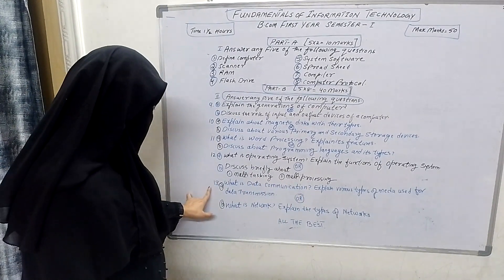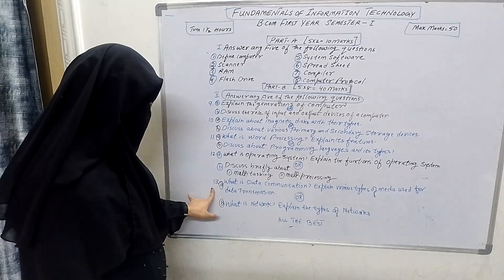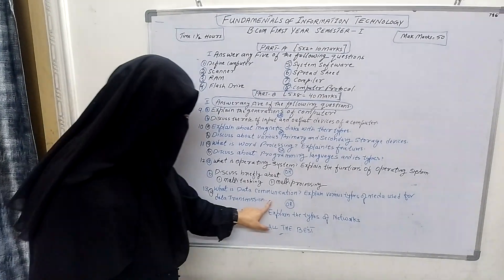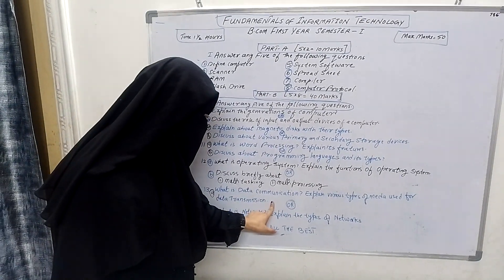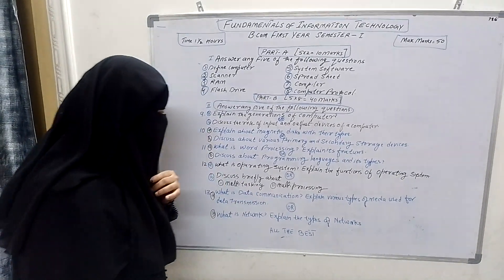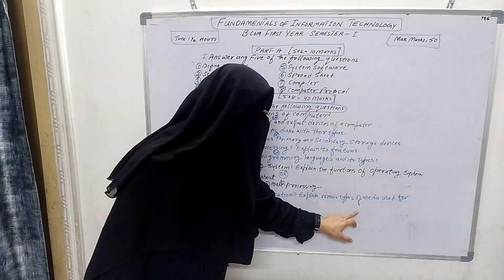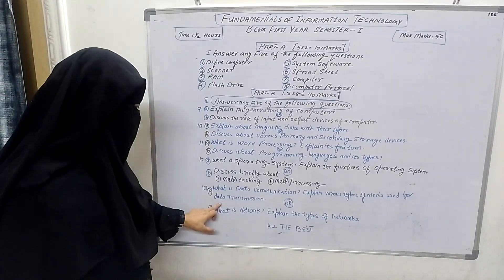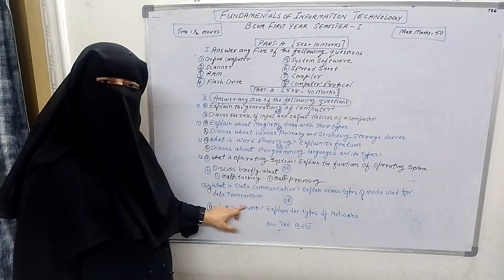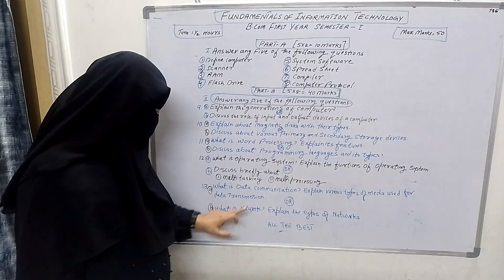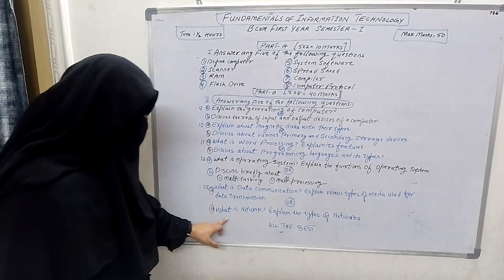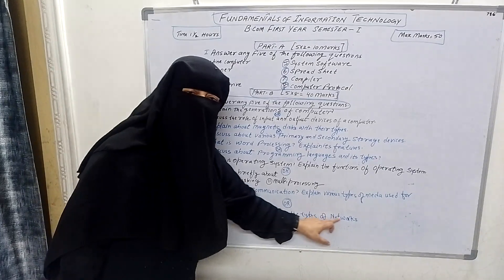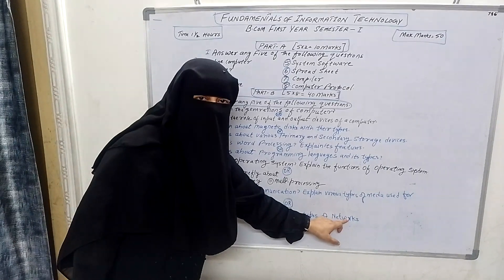Question number 13: A — What is data communication? Explain various types of media used for data transmission. B — What is a network? Explain the types of network.